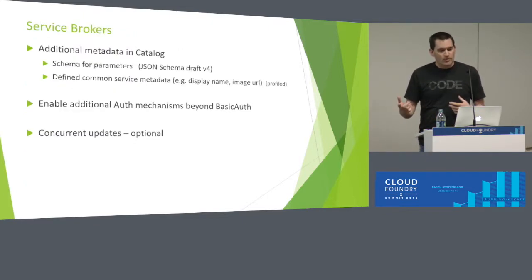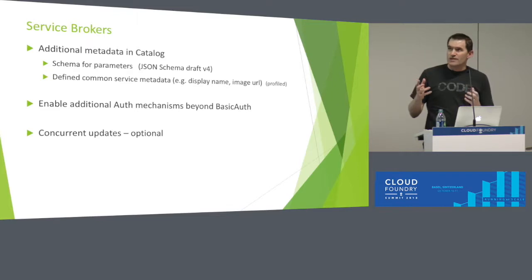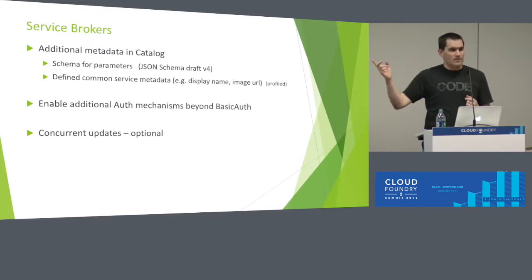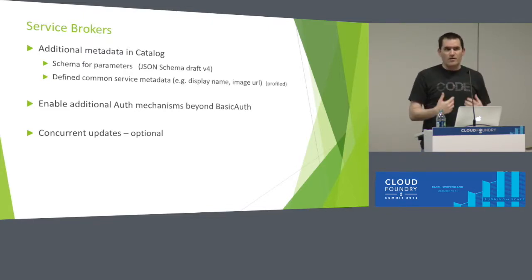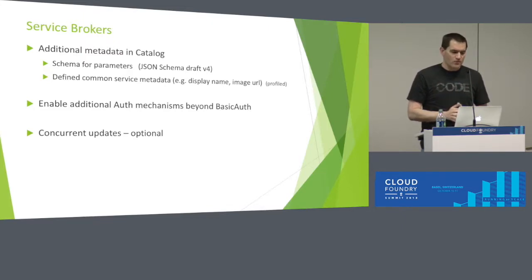From a service broker point of view, one of the key things we recently added was parameter schema. The platform may want to know what parameters a service instance expects or allows. This is actually cool because the platform can take that information and produce a nice user interface — with dropdowns, validation checking on input strings — rather than just accepting a chunk of JSON. You specify the schema in JSON draft version 4.